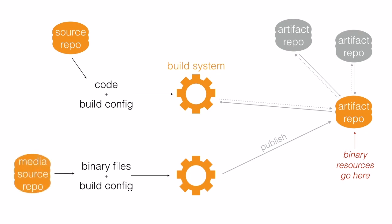We're also going to synchronize our binary files in their build config with another version control repository. That might seem like a strange thing to do. Wasn't the whole reason we put them in the artifact repository so we could keep them out of the version control repository?